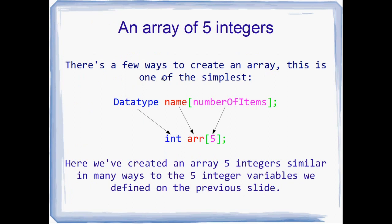Instead, what we can do is use an array. There are a few ways to create an array — we'll look at other ways later when looking at the heap and pointers — but this is one of the simplest ways. We basically say a data type, then the name of the array, then open square brackets, and inside the square brackets we say how many items we want, then close the square bracket and put a semicolon. So here I've got int ARR[5], meaning I want five integers all in a row in RAM, and I'm going to call them ARR.